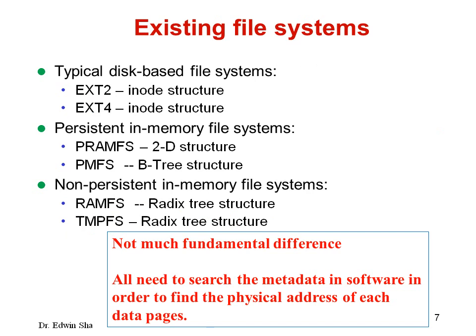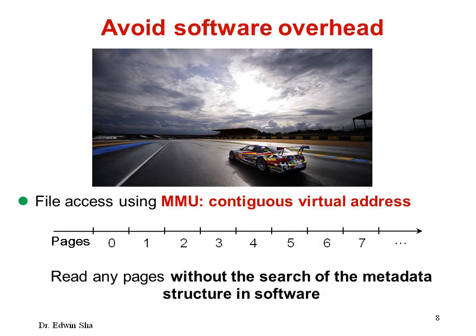All existing file systems such as EXT2, EXT4, PRAMFS, PMFS, etc. do not have much fundamental differences. All need to search the metadata mapping structure in software in order to find the physical address of each data page. But we try to avoid this software overhead.